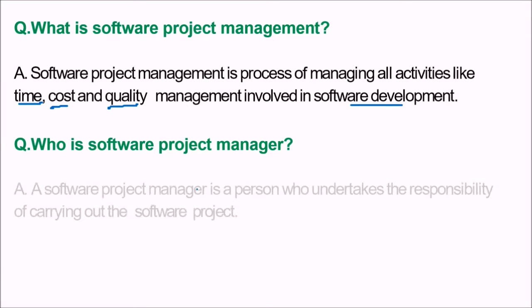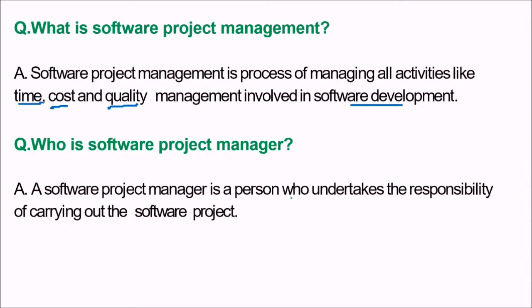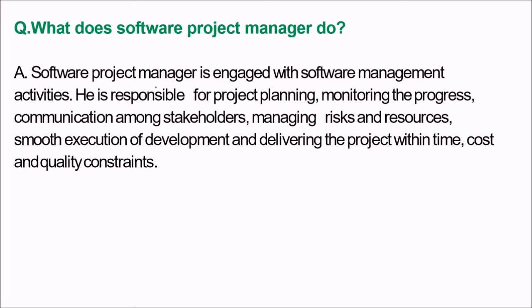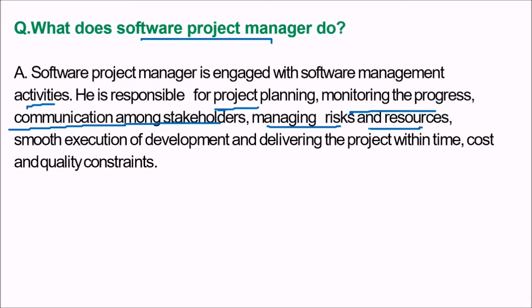Who is the software project manager and what does he do? A software project manager is the person who undertakes the responsibility of carrying out the software project. He manages all activities along with staffing and various resources. He is responsible for project planning, monitoring the process, communicating among stakeholders, managing risks and resources, smooth execution of development, and delivering the project within time, cost, and quality constraints.